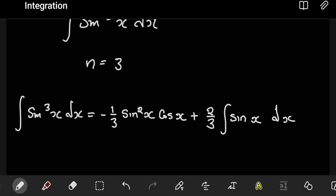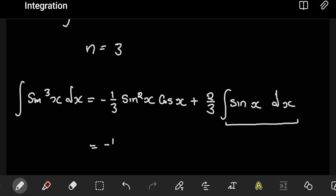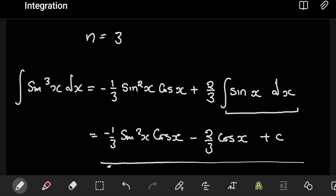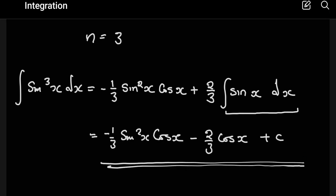It didn't take us long. After this, we see that what we have is a standard integral. So the final solution becomes negative one third sine squared x cos x, plus — the integral of sine is negative cos — so this becomes negative 2 over 3 cos x, plus c, the constant of integration. This is the final answer. In the next class, we're going to look at how to derive the reduction formula for cosine and look at an example.